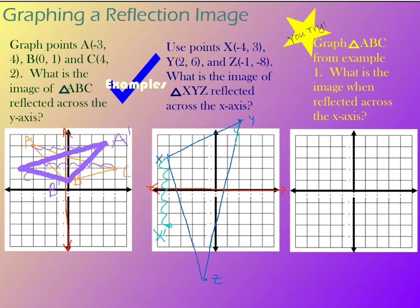My Y, counting 1, 2, 3, 4, 5, 6 units up and then 1, 2, 3, 4, 5, 6 units down. There's Y prime.